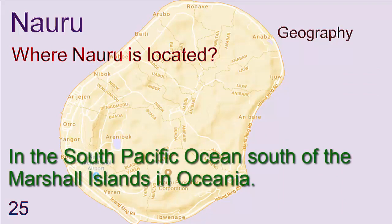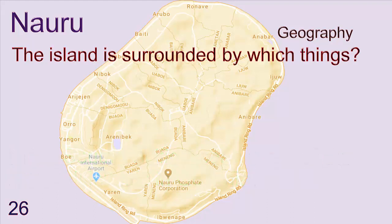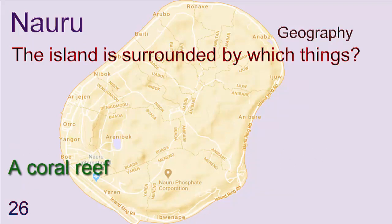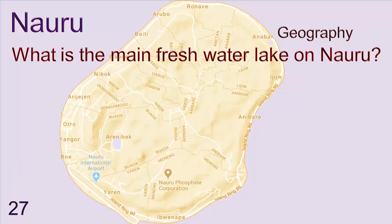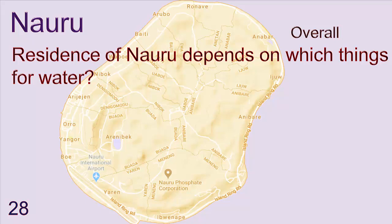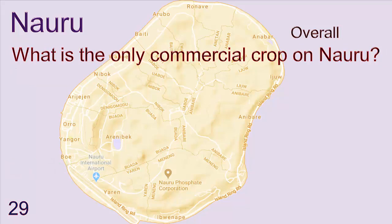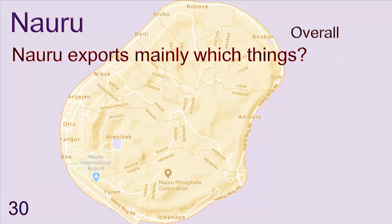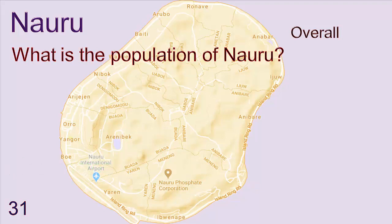Where is Nauru located? In the South Pacific Ocean, south of the Marshall Islands, in Oceania. The island is surrounded by a coral reef. What is the main freshwater lake in Nauru? Buada Lagoon. Residents of Nauru depend on rainfall for water. What is the only commercial crop in Nauru? Coconuts. Nauru exports phosphates.